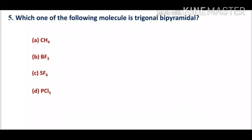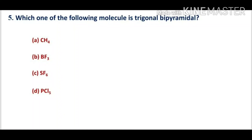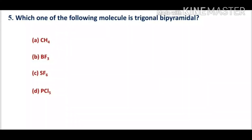Option A, CH4 (methane), has an SP3 hybridized central atom, so it is a tetrahedral structure. Option B, BF3, is SP2 hybridized with three bonding pairs, so its shape is trigonal planar. Option C, SF6, has six bond pairs and no lone pairs, so it is octahedral.